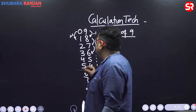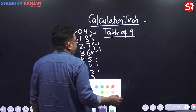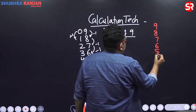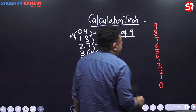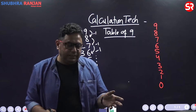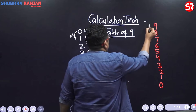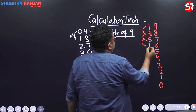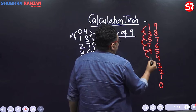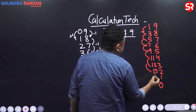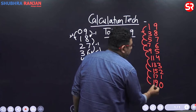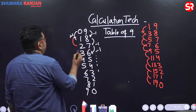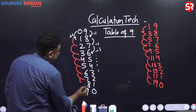Let's talk about table of 19. Again, I start with 9, 8, 7, 6, 5, 4, 3, 2, 1 and 0 on one side. On the other side, 19 once is 19, so 1 over here, and what do you do? Plus 2: 1, 3, plus 2 is 5, plus 2 is 7, plus 2 is 9, plus 2 is 11, plus 2 is 13, plus 2 is 15, plus 2 is 17, plus 2 is 19. So table of 19 has plus 2 on the other side — that side was plus 1, this side is plus 2.